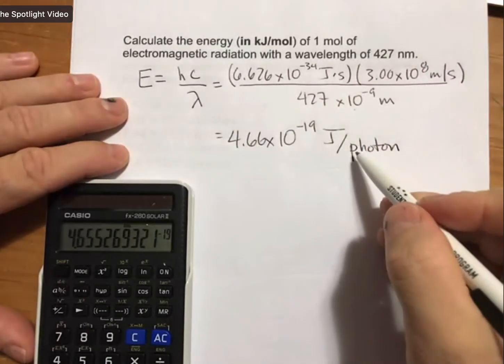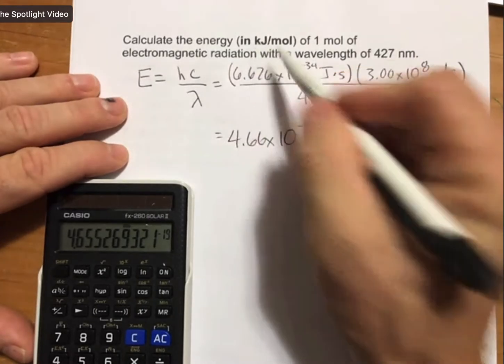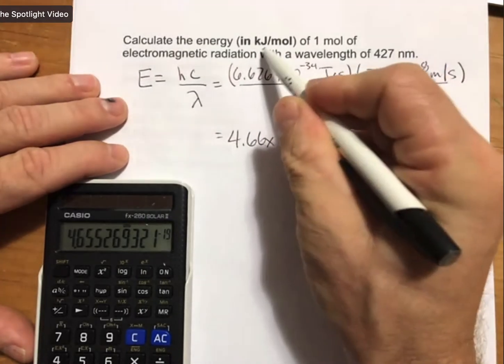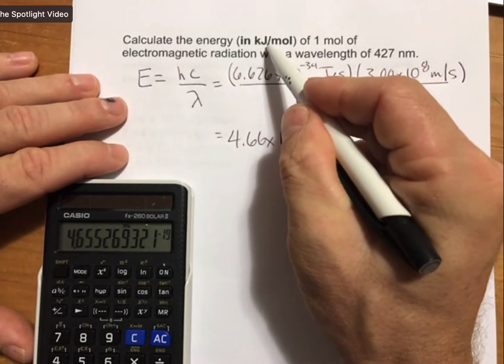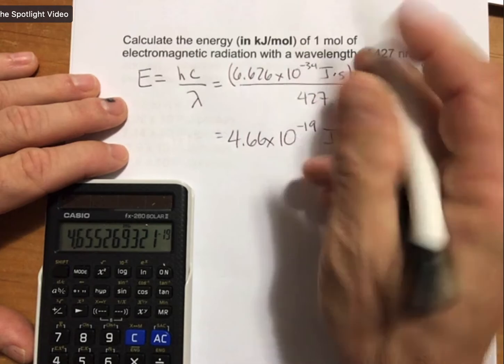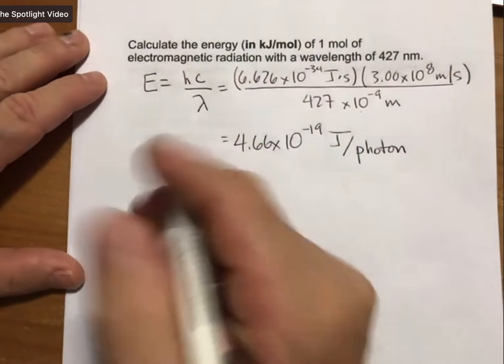And we're going to need this joules per photon as we convert it from joules per photon to kilojoules per mole. And really, it's going to be kilojoules per mole of photons. Let's set that up.